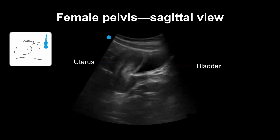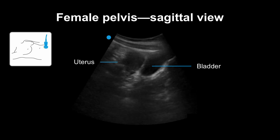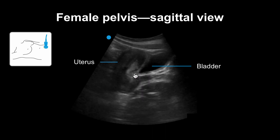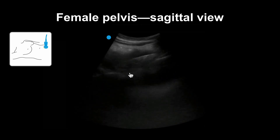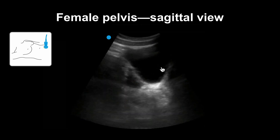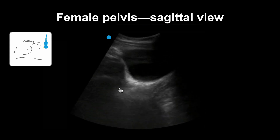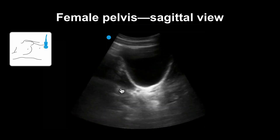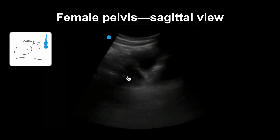Thus, this uterus is anteroflexed, with the bladder located more towards the feet. You are looking for fluid between the uterus and the bladder in this interface. Here you can see free fluid in the female pelvis — black, filling up the potential space without any sharp borders. Here is the bladder, and here is the fluid. You can see the uterus for a second in this clip as the solid structure. Your eye should train itself to look posterior to the bladder for free fluid.